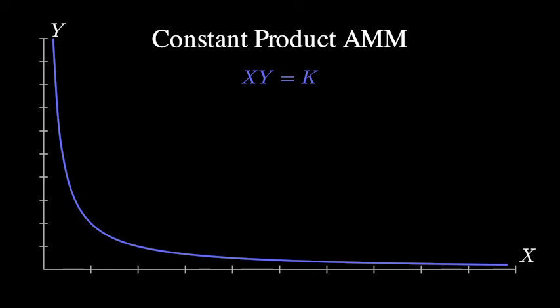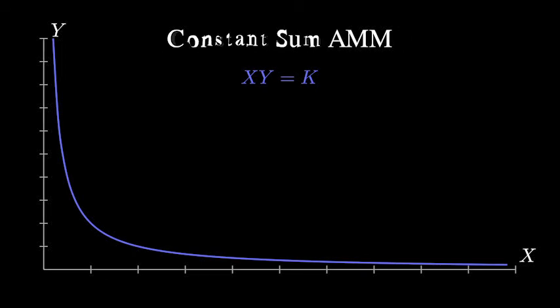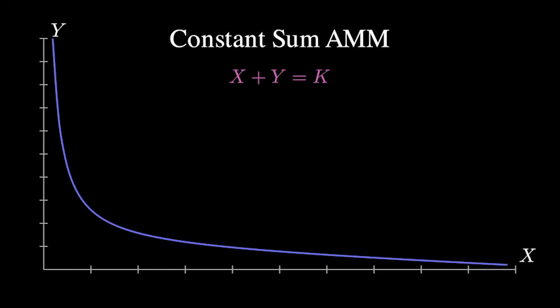What if tokens X and Y were always exactly the same price? Well, then we could use something called a constant sum AMM without having any problems. In a constant sum AMM, I can always get one Y token from my X token, which is described by the rule X plus Y is equal to some constant.